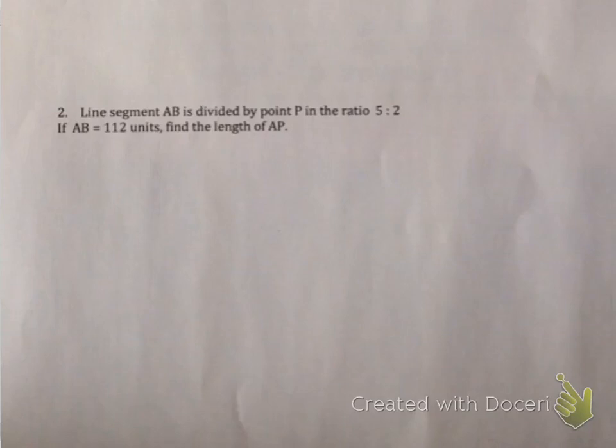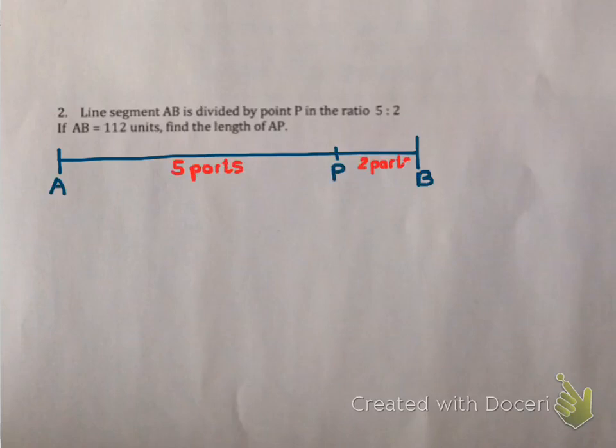Let's have a look at a second example. Line segment AB is divided by point P in the ratio of 5 to 2. So I'm going to randomly put in P and divide it 5 parts to 2 parts. Now this time it's a bit different because they've told us that AB is 112 units and they want us to find the length of AP. So we're going to need to compare AP and AB, simply because that's what they want and what they've given us.